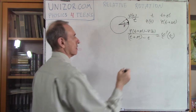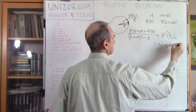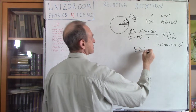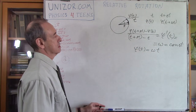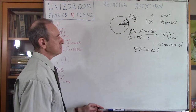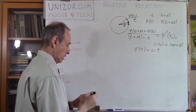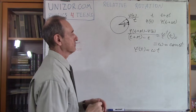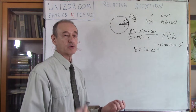I assume in all the problems we will consider that this is equal to a constant, in which case phi of t is equal to omega times t, if at moment t equals zero I was at angle zero. So this is our normal assumption. This is basically what angular velocity is. We will measure it in radians per unit of time.